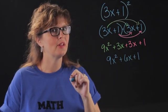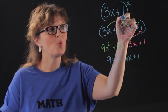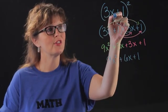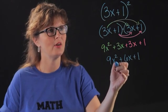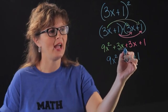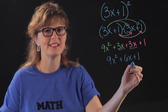Now if you notice something really interesting, if we square this 1 we get a 1 here. If we square this 3x we get a 9x squared here. And if we multiply these two together and double it, which is what happened here, then we get 6x.